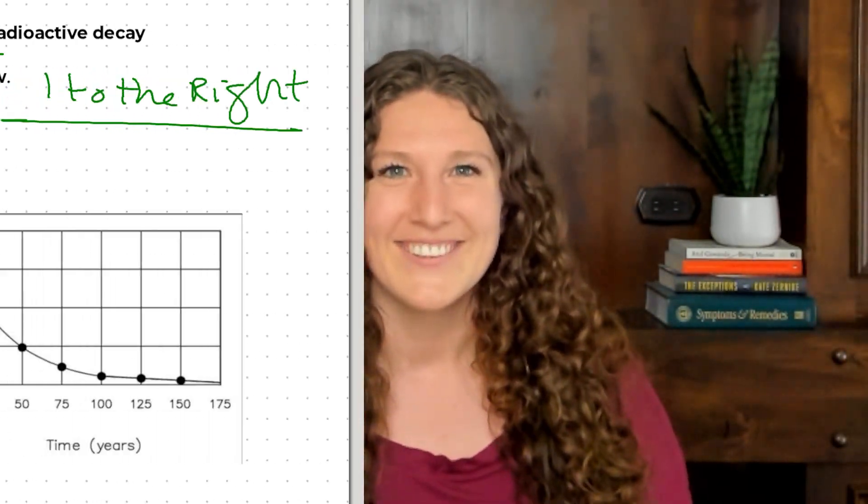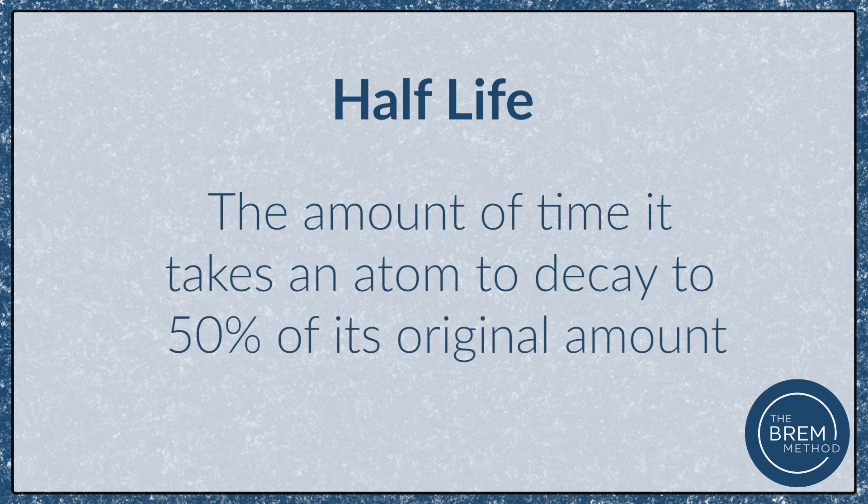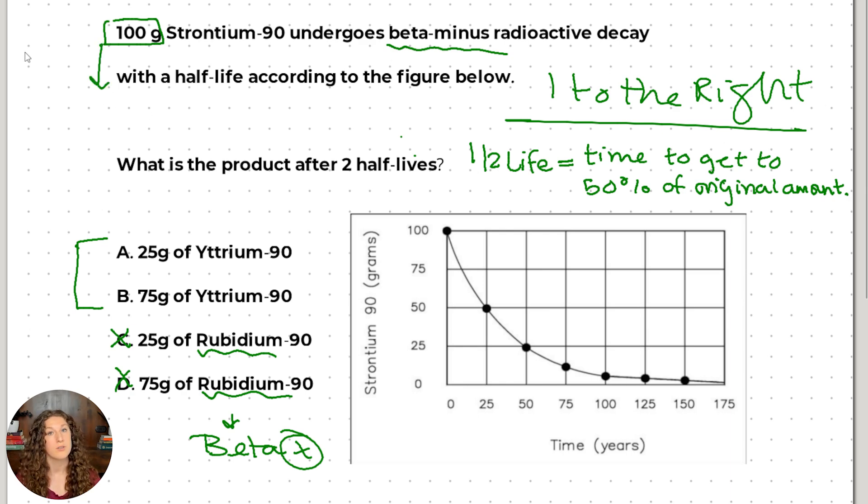Let's dive back in and finish out this question. We're down to A and B, and now we just need to determine what is the product amount, 25 grams or 75 grams, after two half-lives. So first we need to define half-life. A half-life is the amount of time it takes for our atom to decay 50% of its original amount. So however much we had, the amount of time it takes to get down to 50% of that amount, that's our half-life. Our original amount when we started was 100 grams. So what would be 50% of that? It would just be 50 grams.